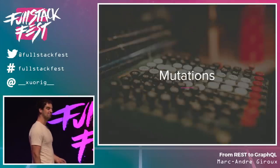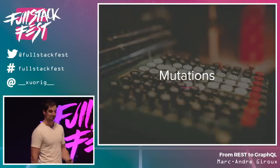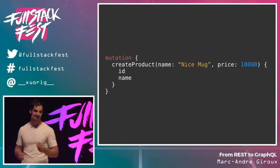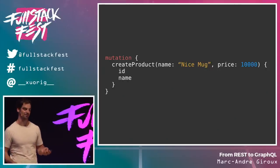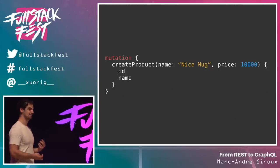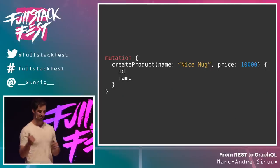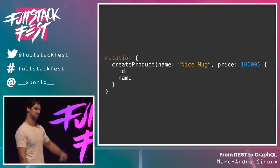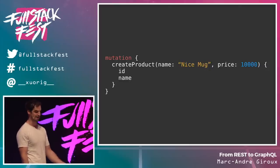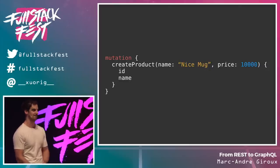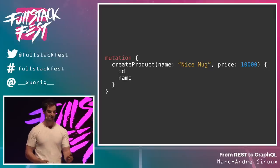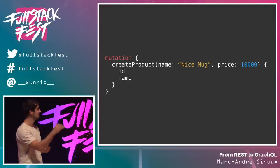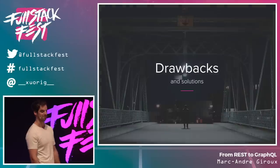We've only seen read-only so far, but we can write too. In GraphQL, writes are called mutations. They look pretty much exactly like a normal field, except they're only on the root — there's a query root and a mutation root, so they're top-level actions. They have side effects, but we can still select a return type and choose what we want from the response.